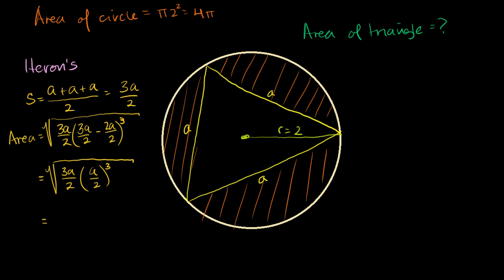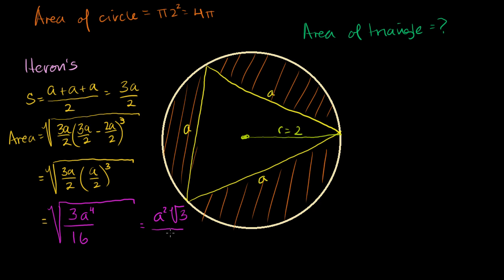So the area equals the square root of (3a/2) times (a/2) to the third power. That gives us 3a times a to the third, which is 3a to the fourth, over 2 times 2 to the third — that's 2 to the fourth, or 16. Taking the square root: the square root of a to the fourth is a squared, times the square root of 3, over the square root of 16, which is 4. So the area of this equilateral triangle in terms of a is a² times √3 over 4.